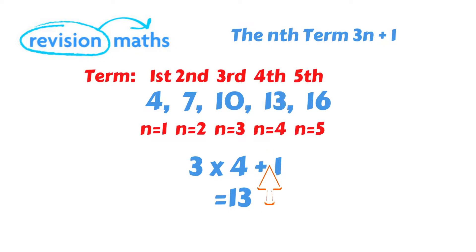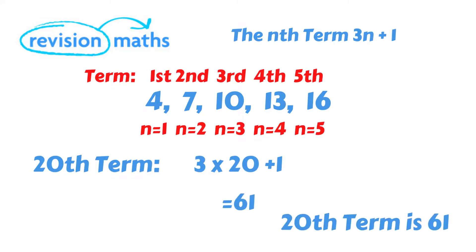Now for this sequence we can easily look this up just by looking at the sequence. But for bigger terms, say the 20th term, we can't just look at our sequence. So we need to work out the term using the expression. So 3 times 20 plus 1 equals 61. So the 20th term is therefore 61.